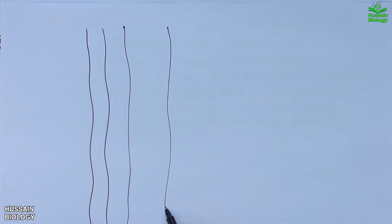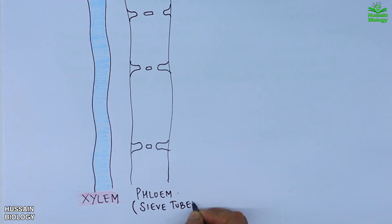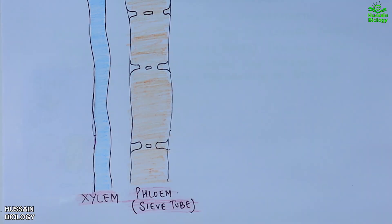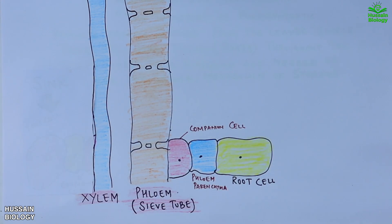On the left we have the xylem shown in blue, and on the right we have the phloem sieve tubes arranged end to end forming a tube. Looking at the root side, on the sieve tube we have the companion cells surrounding it, then the phloem parenchyma, and the root cells shown in the diagram.